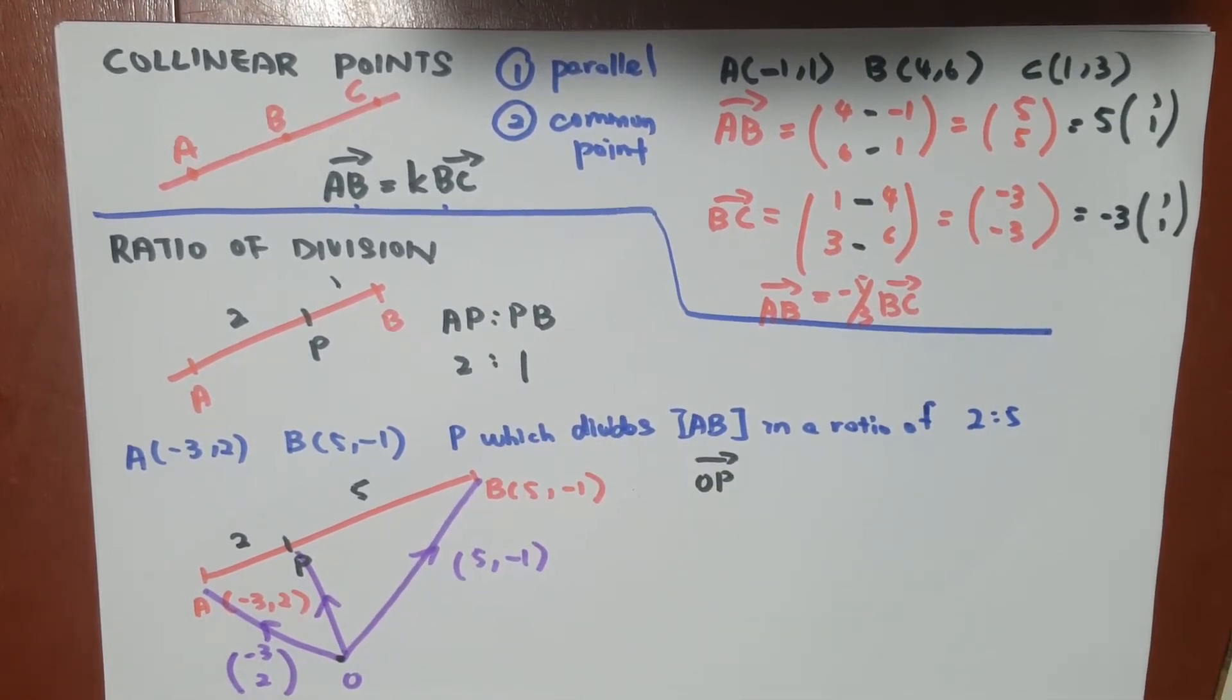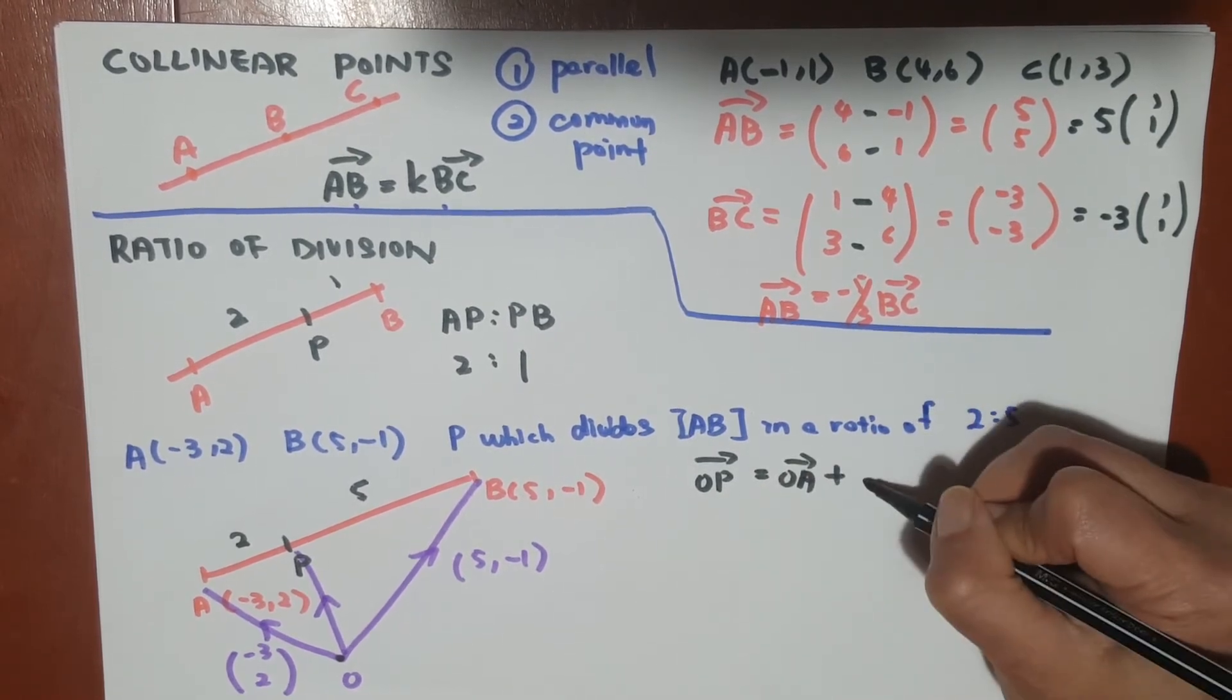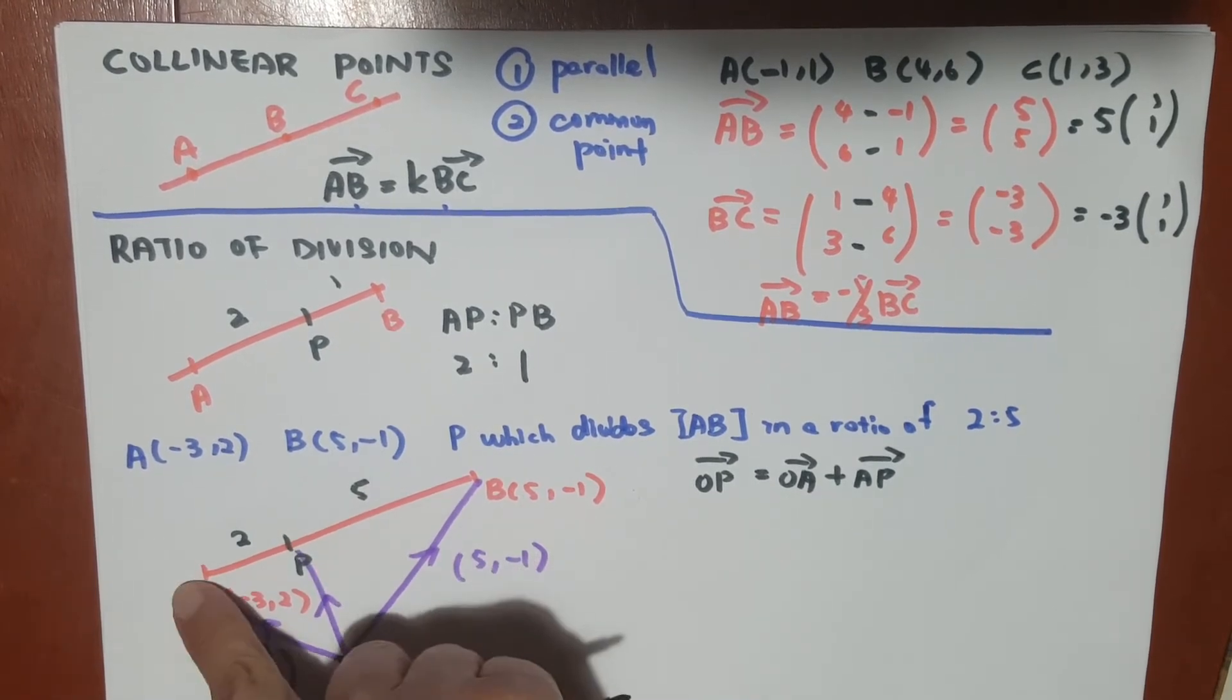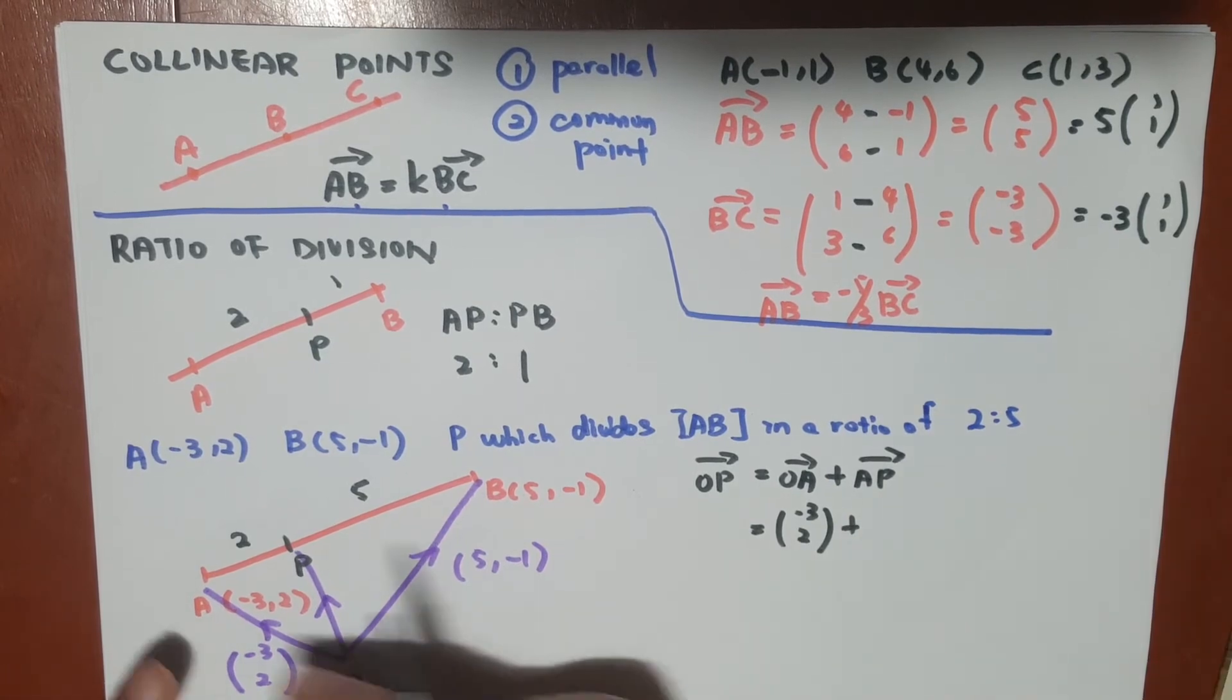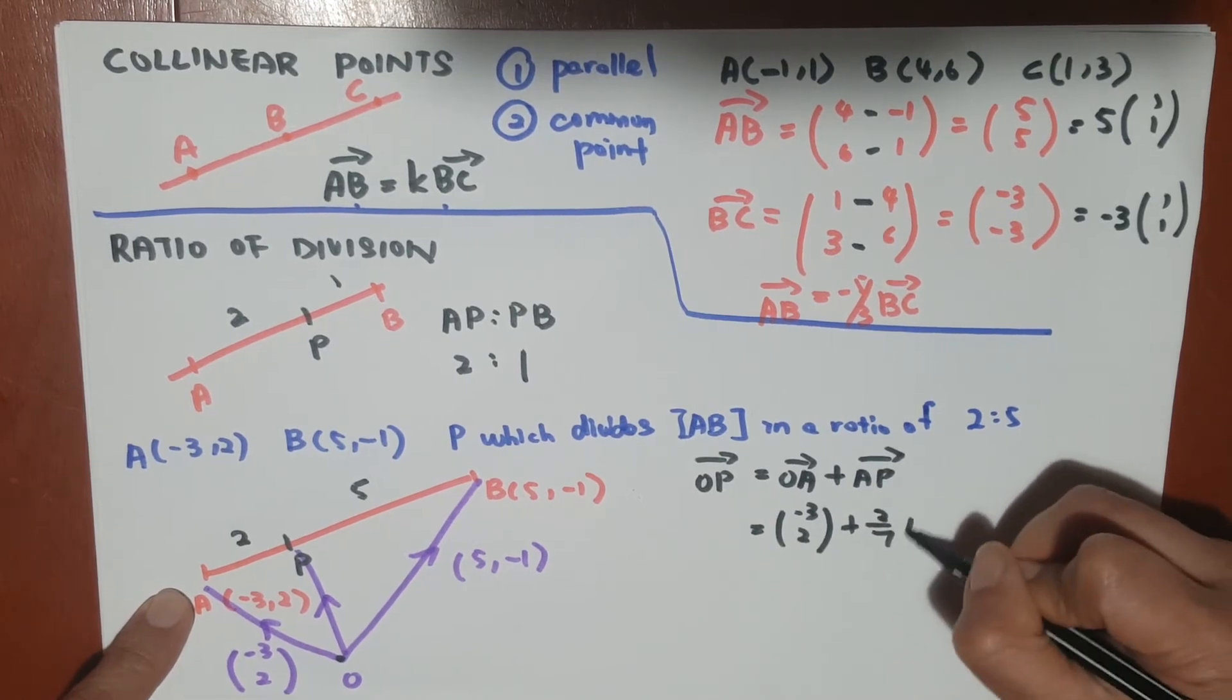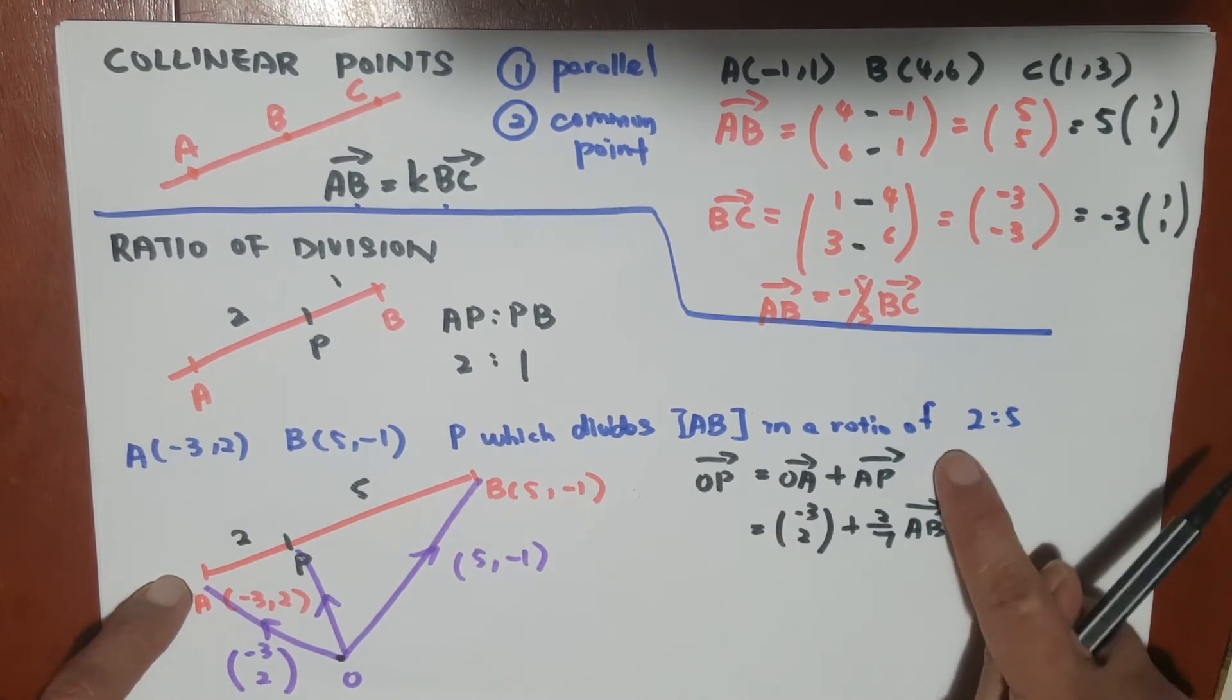By equating vectors, OP is going from O to A and A to P. We know that OA is (-3, 2). So what's AP? AP is 2/7 of AB. The reason is because the whole length is 7 and AP is just 2. So 2 out of 7 times AB is our AP.